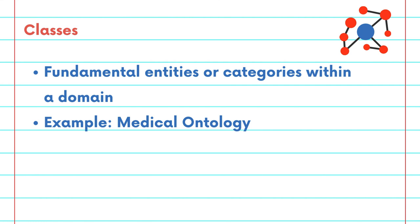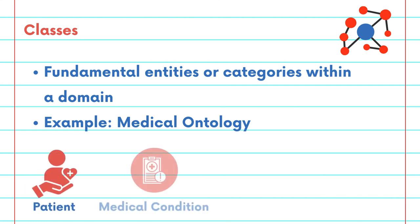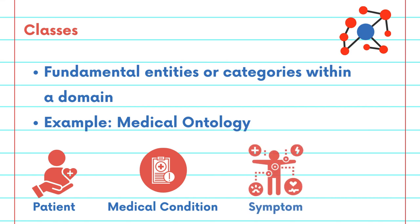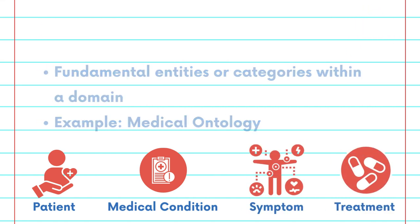Classes are fundamental entities or categories within a domain. For example, in a medical ontology, classes might include patient, medical condition, symptom, and treatment.